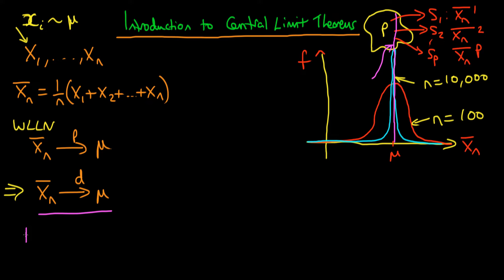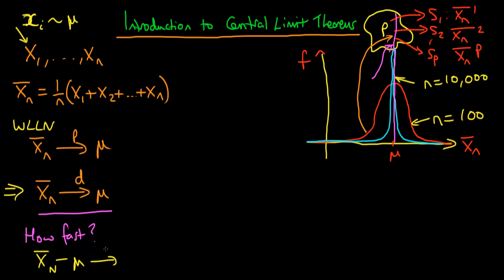One thing I haven't spoken about yet is how fast does x̄ₙ tend in distribution to μ. Or diagrammatically, how fast does my sampling distribution approach the purple line at μ — how fast does it converge to this straight line? A nicer way to think about this is to ask: how fast does x̄ₙ − μ converge in distribution to zero? It turns out we can illustrate this quite well graphically.